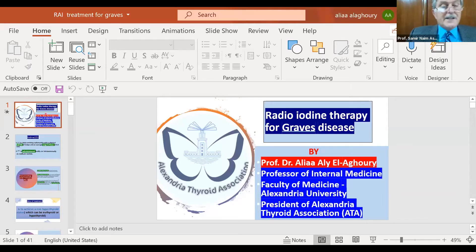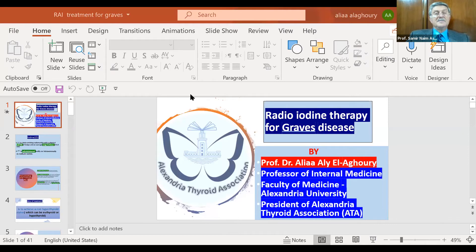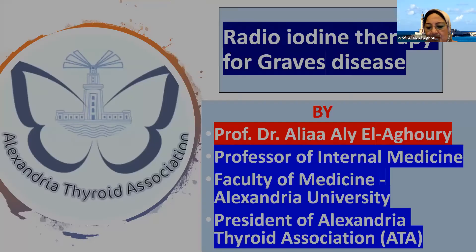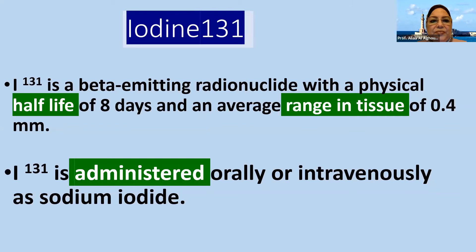First of all, iodine-131 is a beta-emitting radionuclide with a physical half-life of eight days and an average range in the tissue of 0.4 mm.